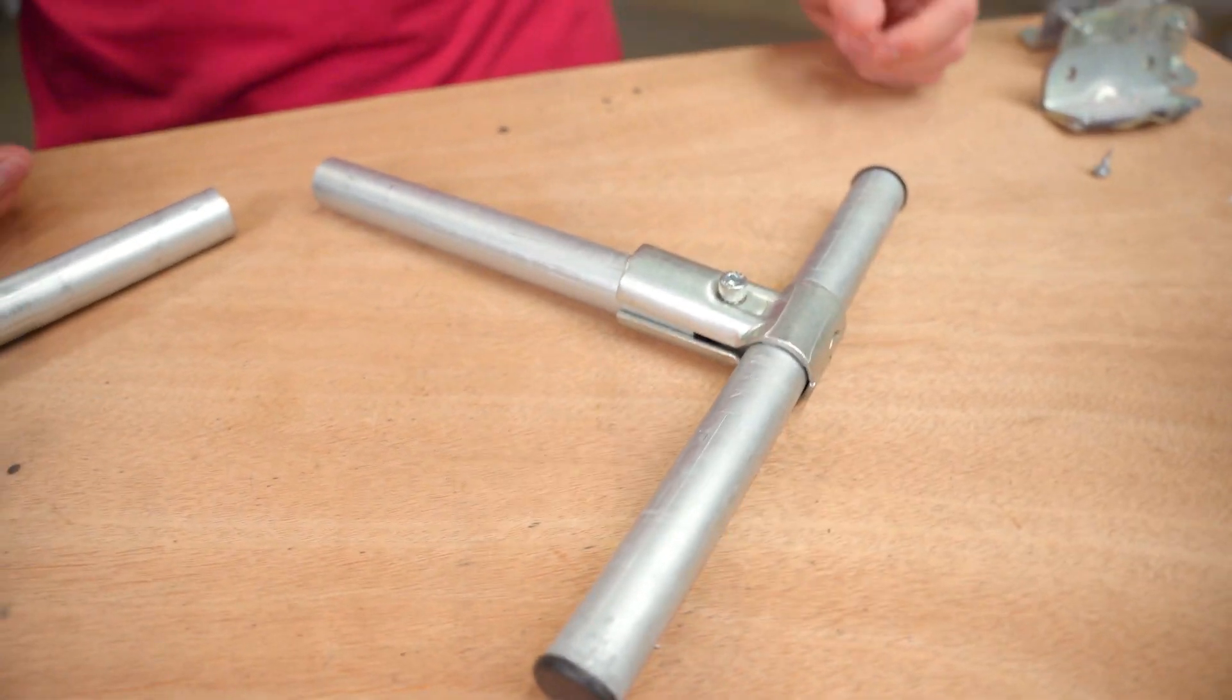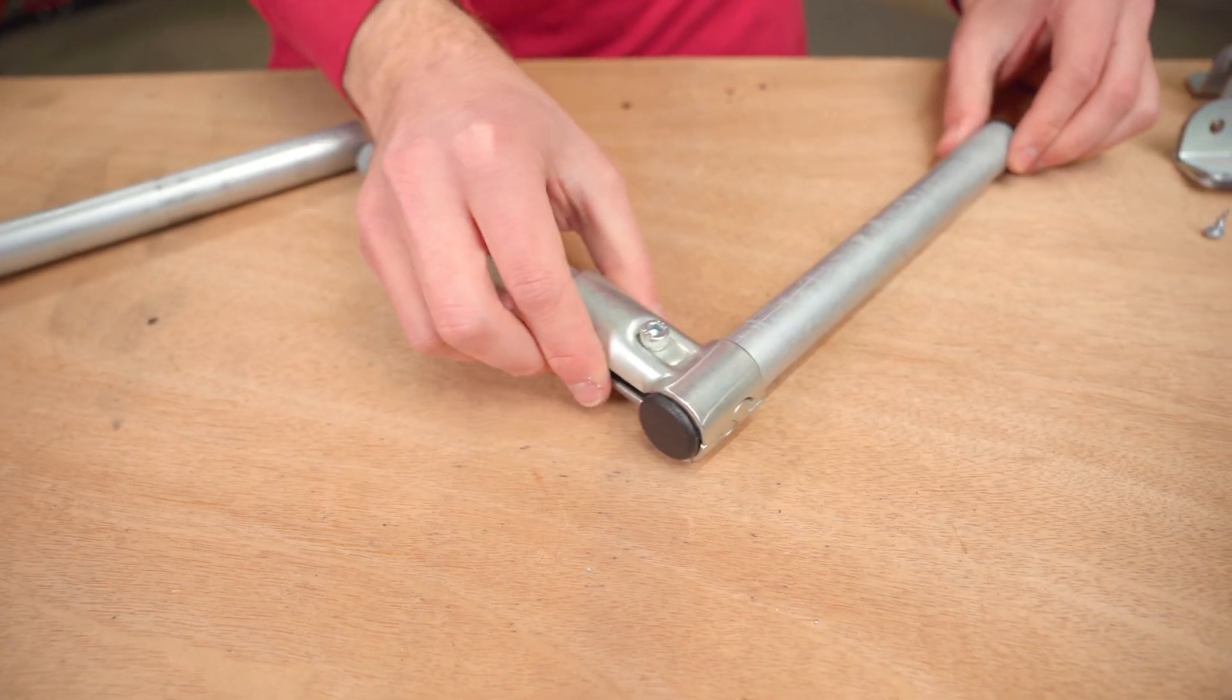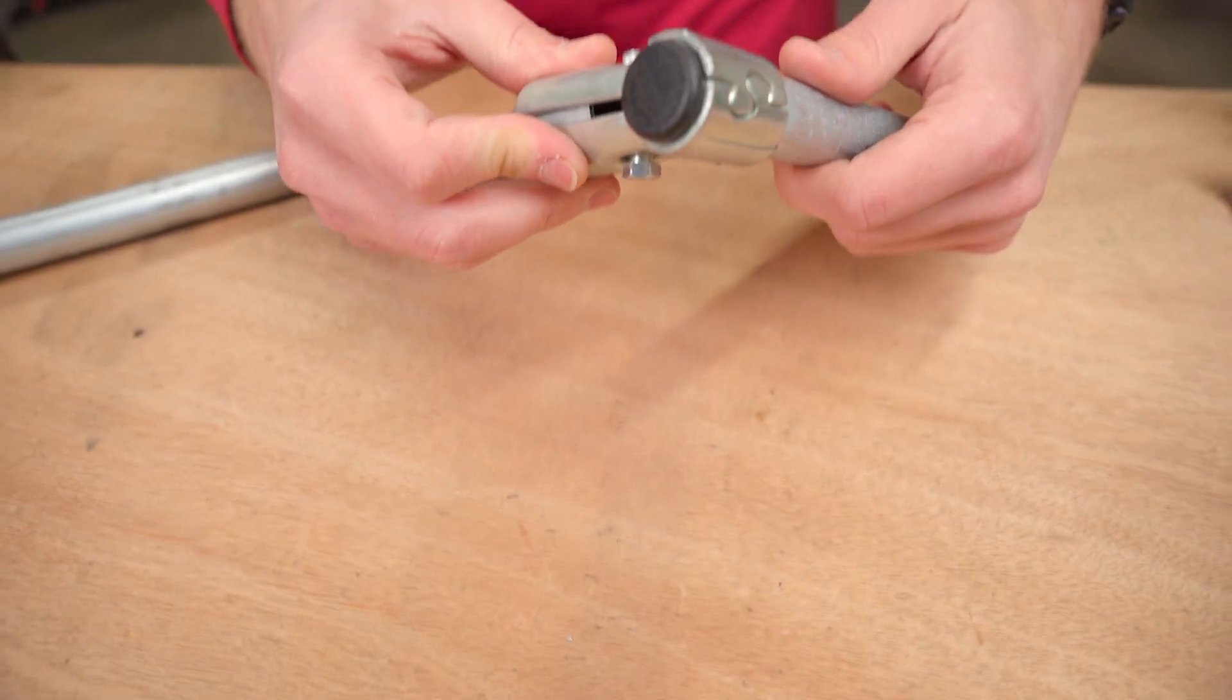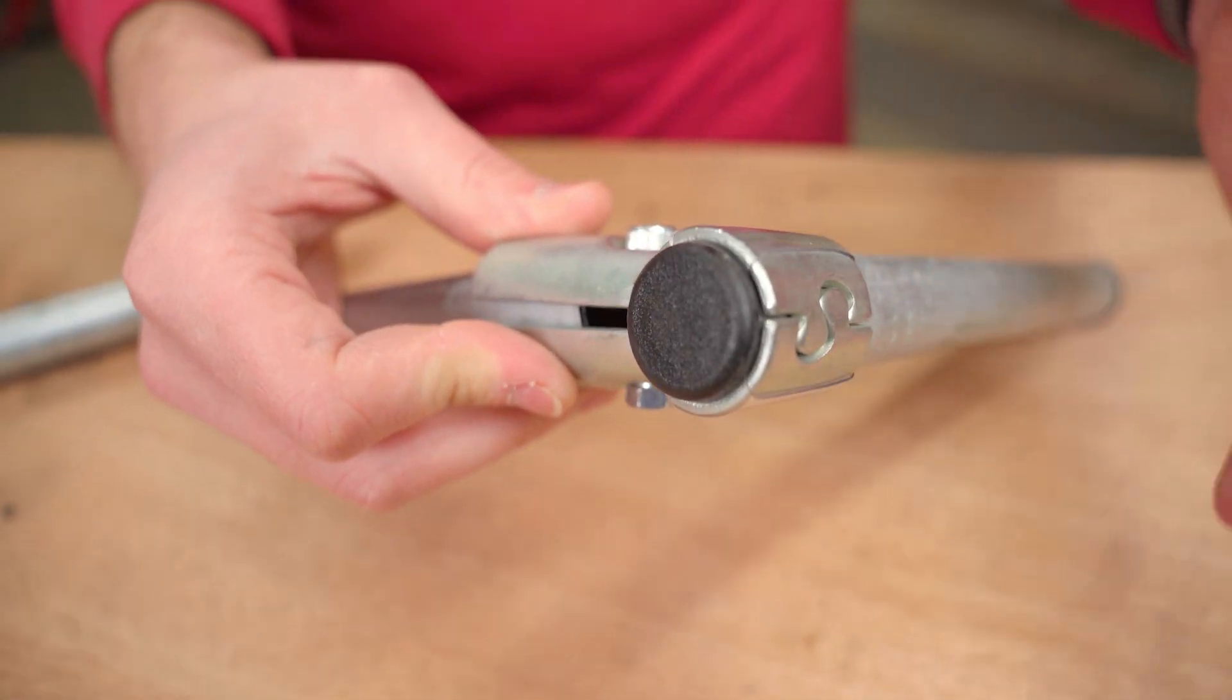And you can actually use this to make an elbow. You just want to put it on the very end of a piece of conduit, and then I've added an end cap here, which works nice if you're outside and you want to keep stuff from getting inside.